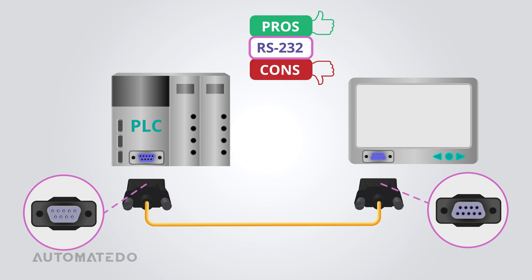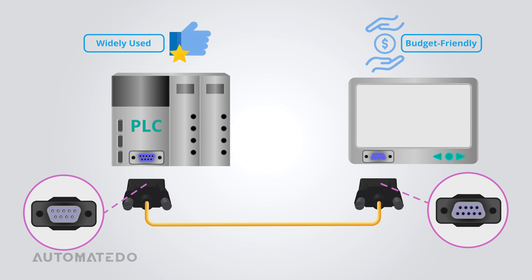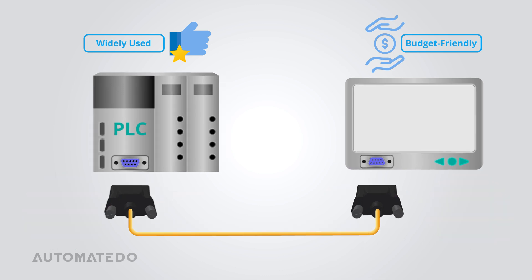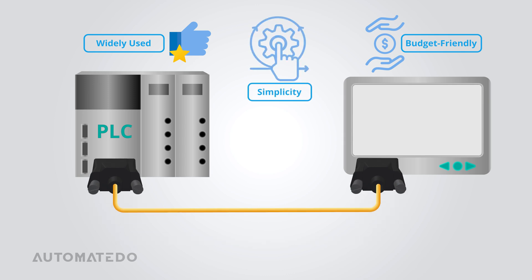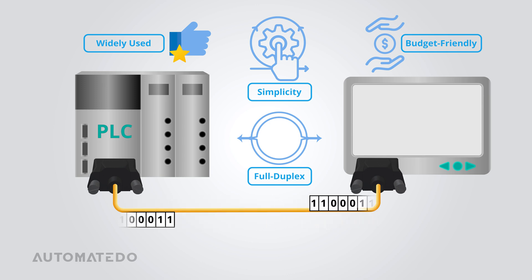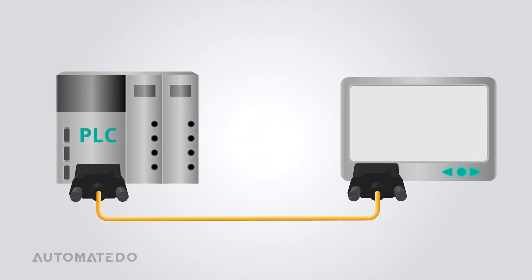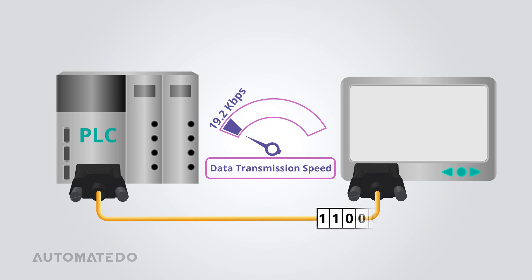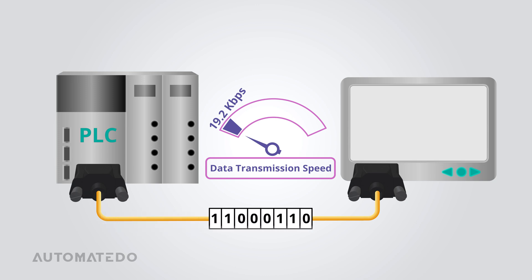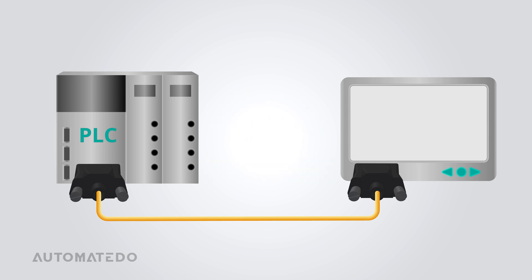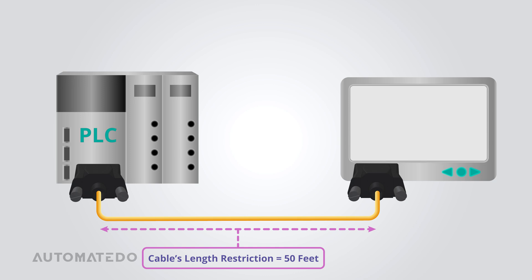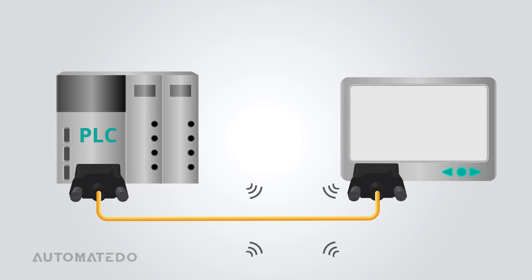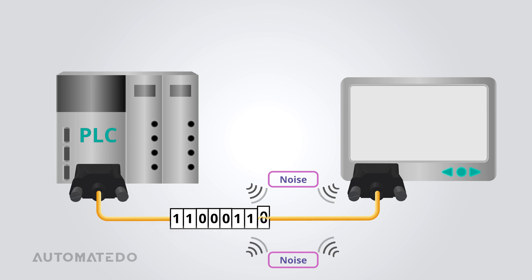RS-232 is a widely used and budget-friendly standard, boosting compatibility with numerous devices and cables. The simplicity of RS-232 is a key benefit, ensuring ease of use and straightforward implementation. RS-232 also supports full-duplex communication, allowing simultaneous transmission and reception of data. On the other hand, RS-232 is limited to speeds of up to 19.2 kilobits per second — significantly slower than modern standards. Cables can extend only up to approximately 50 feet, and radiofrequency interference (RFI) and electromagnetic interference (EMI) often affect RS-232 cables, leading to potential signal loss or degradation.